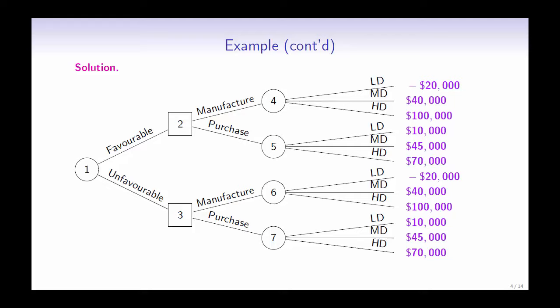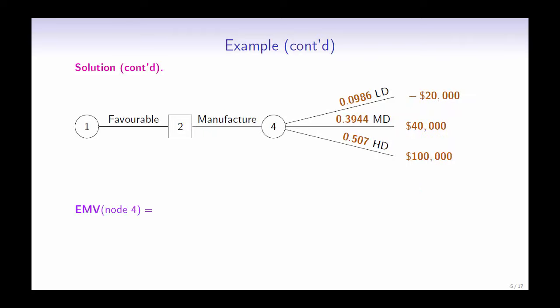Recall the process of folding back a decision tree. We will need to move from right to left, calculating the expected payoff at each outcome node. So first, we will need to calculate the expected payoff at nodes 4, 5, 6, and 7. Looking at a piece of the decision tree, let's calculate the expected payoff at node 4.